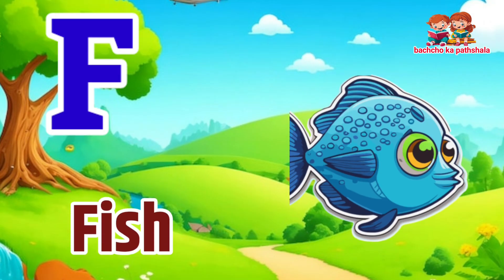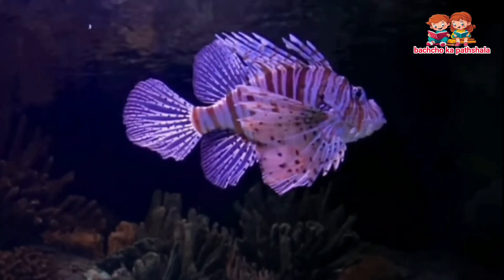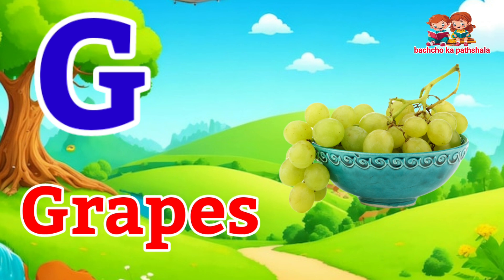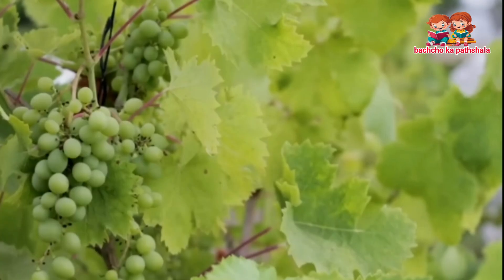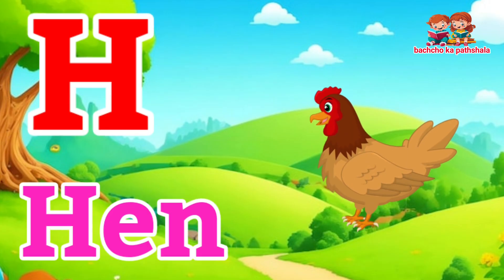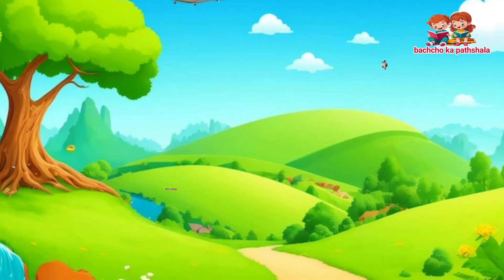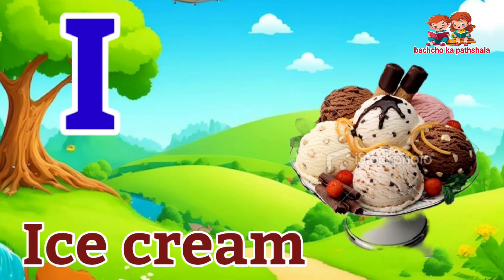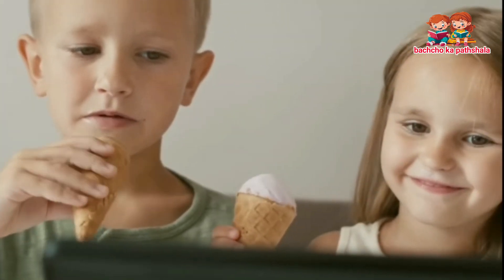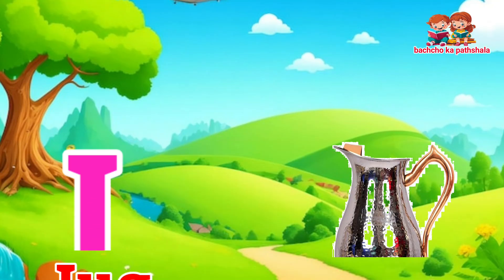F for peas. G for grapes. H for hen. I for ice cream. J for dog.